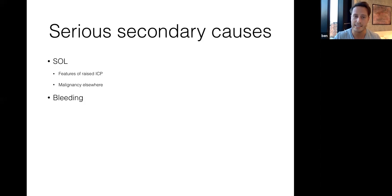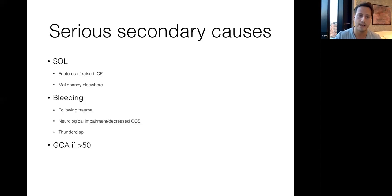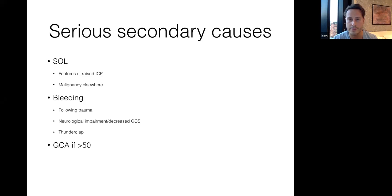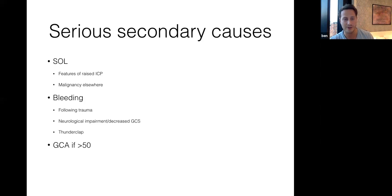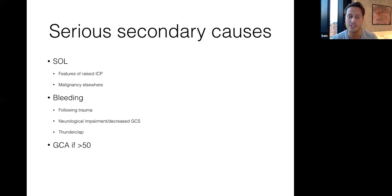Another serious secondary cause is bleeding in the brain — either from trauma or a thunderclap headache raising concern for subarachnoid hemorrhage, when a small arterial vessel pops and blood floods into the brain causing sudden onset headache. These patients are usually very ill. I'd be worried if their GCS dropped and they were drowsy, and if the headache onset was true thunderclap in nature. Another serious secondary cause is GCA — giant cell arteritis — really only if they're over 50 years old. And infection: meningitis — fever, meningism, photophobia, stiff neck.